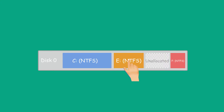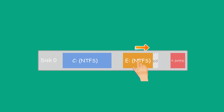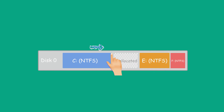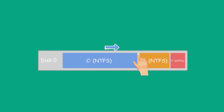Then move the E partition to the right side of the unallocated space so that the C partition is adjacent to the unallocated space, and then long press the right side of the C partition to the right to complete the partition expansion.